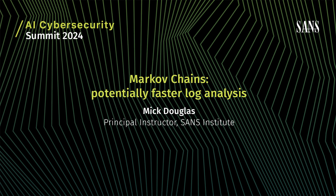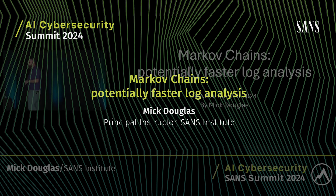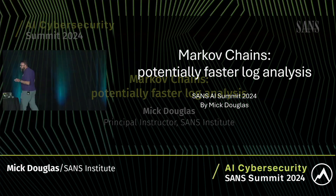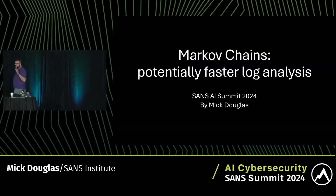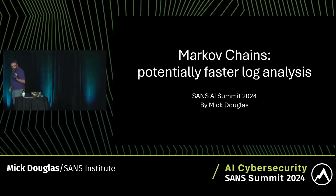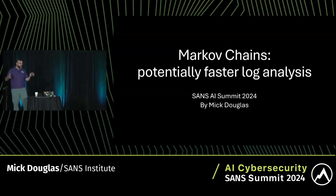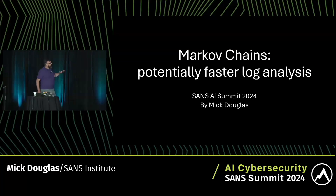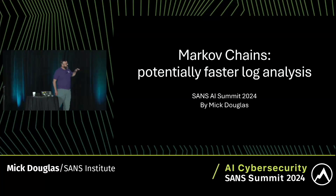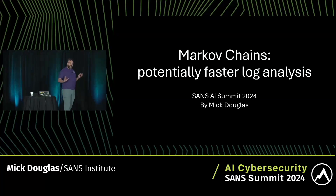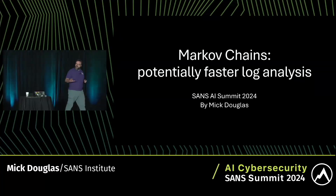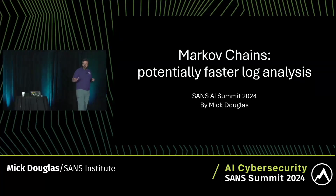What we're going to be talking about today are Markov chains. For those of you who don't know, Markov chains are a type of predictive algorithm. They're not actually machine learning. They're not actually AI. And that's why they can potentially make for faster log analysis.